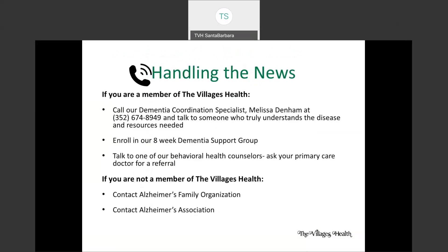Handling the news. A lot of other chronic disease conditions will allow a person to remain largely independent through large stretches of the disease process — for example, COPD, multiple sclerosis, or even cancer. However, Alzheimer's and other related dementias affect a person's ability to understand what's going on around them and to make decisions as time goes on.